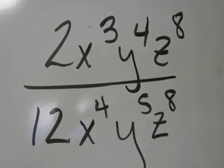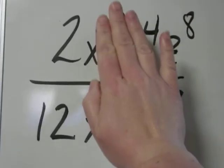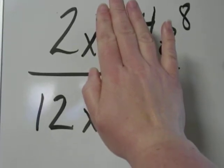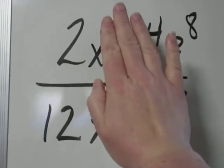Now we have two different sets of rules here. Ignore the variables and just look at the fraction 2 over 12. Doesn't 2 over 12 reduce?